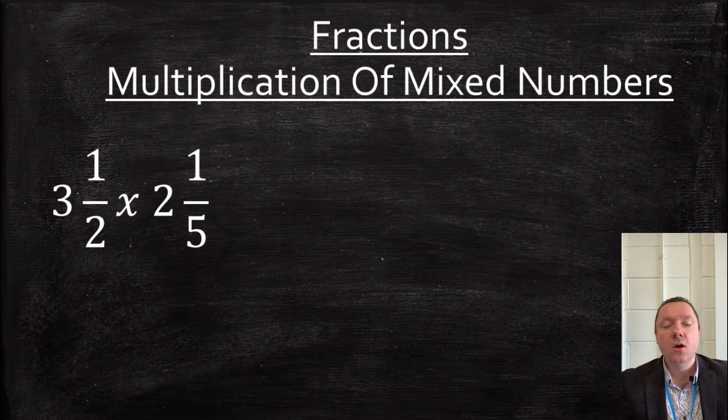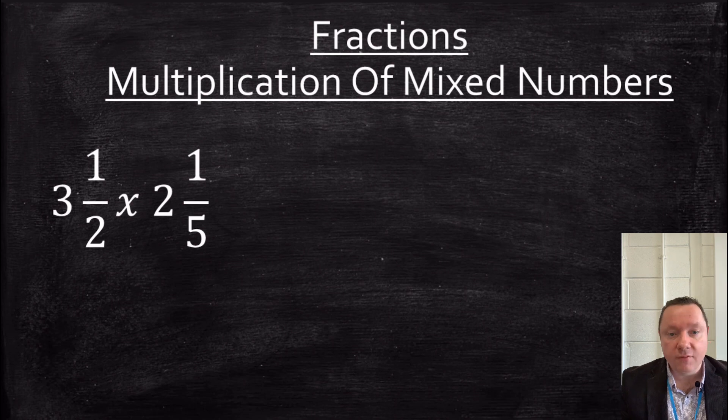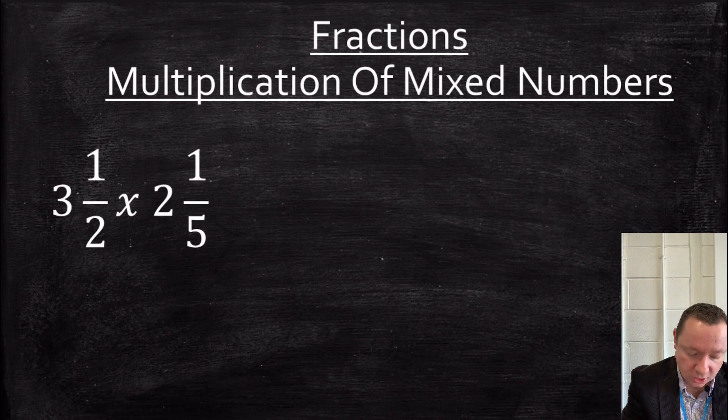So to avoid all that nonsense, we always turn, when it's times and divide, fractions, mixed numbers into improper fractions. So let's start there. 3 and a half. So I do how many halves make 3? 3 times 2, that's 6, plus an extra 1.